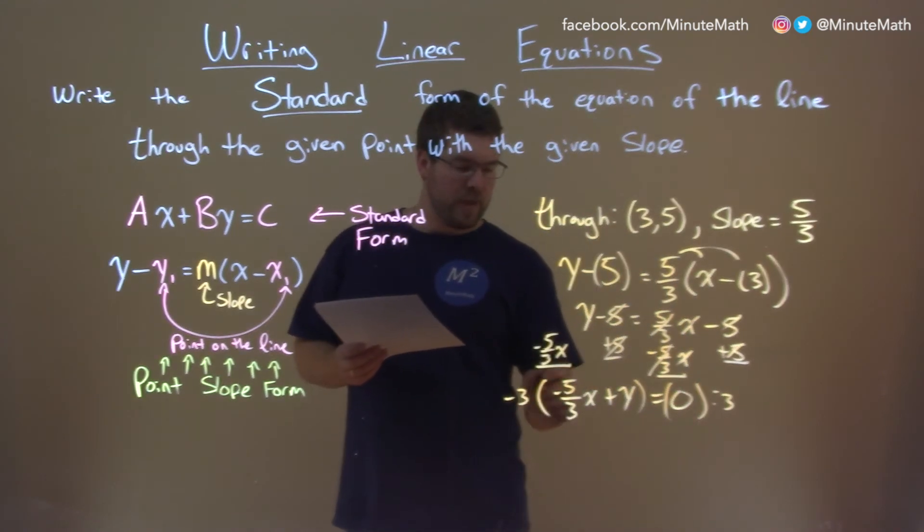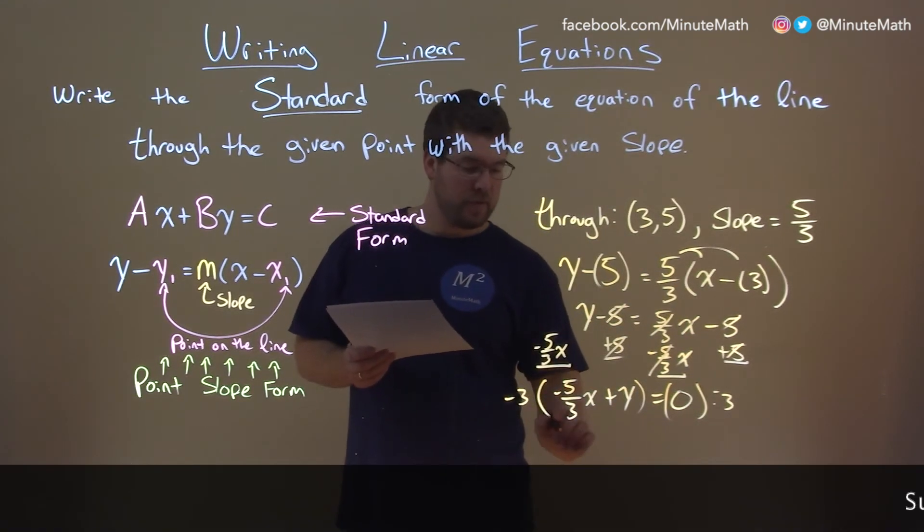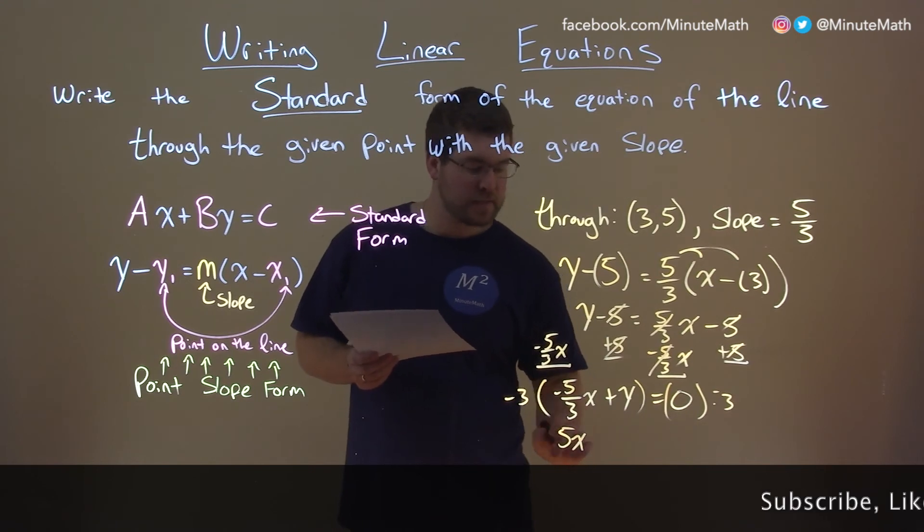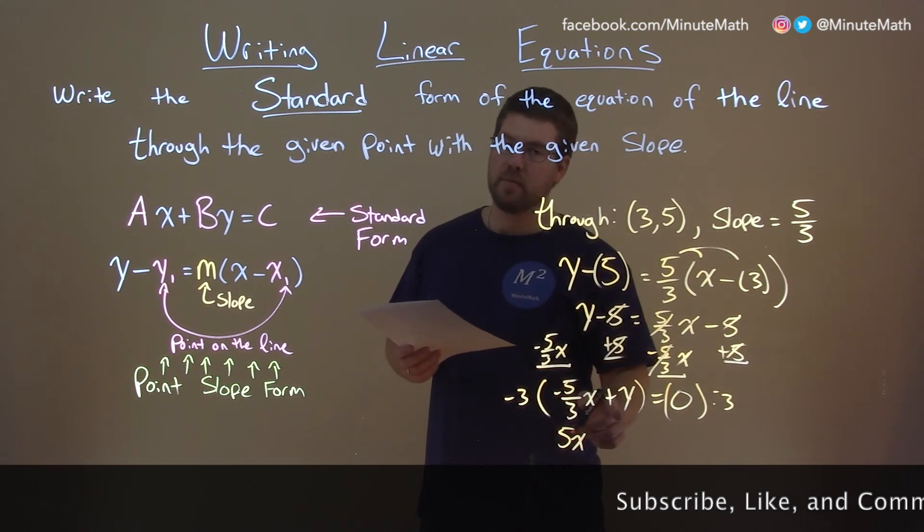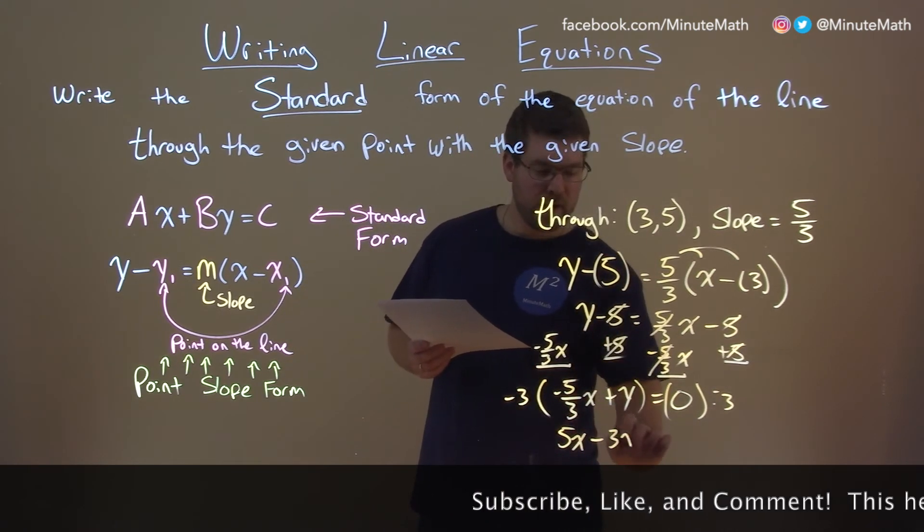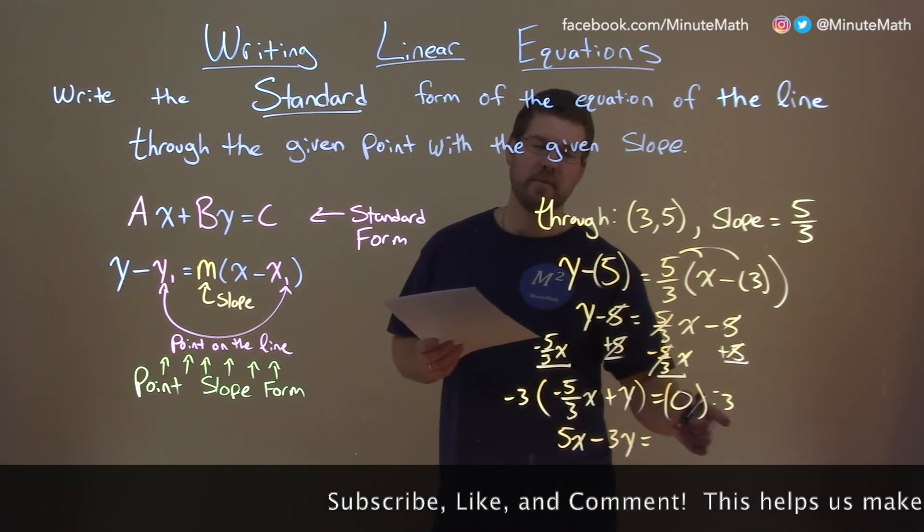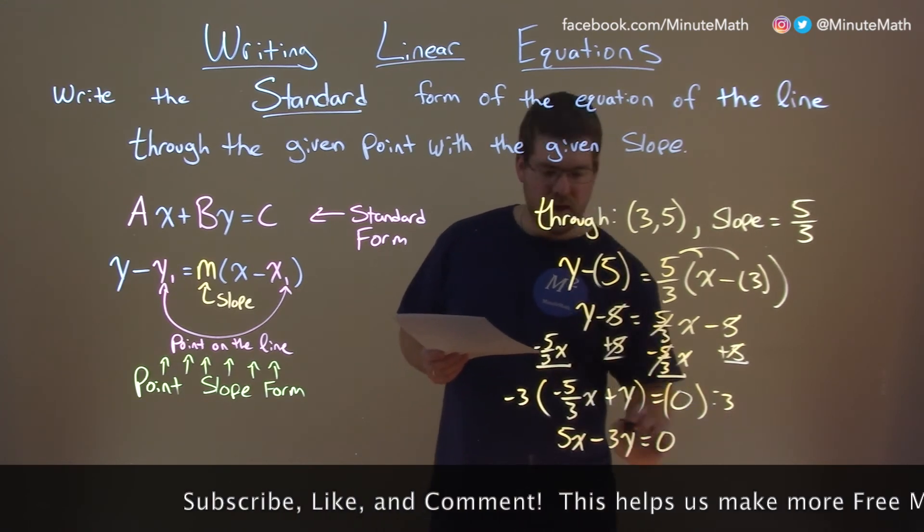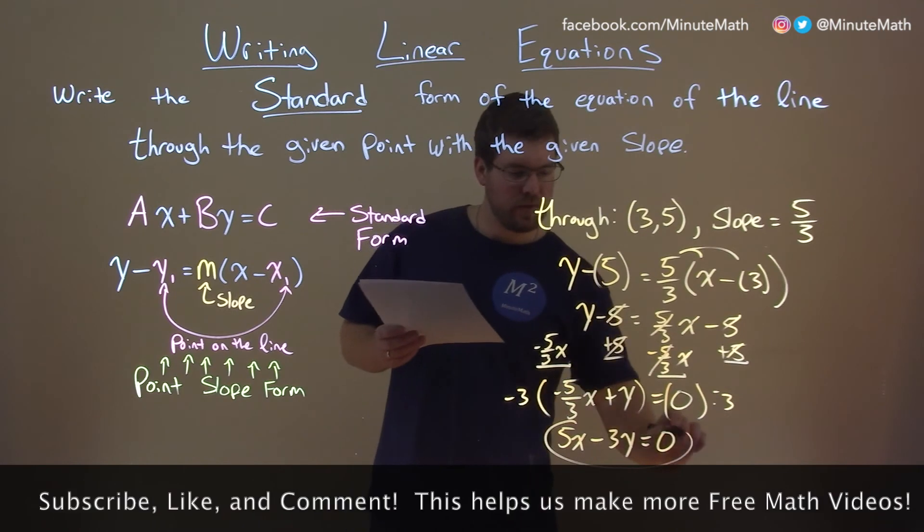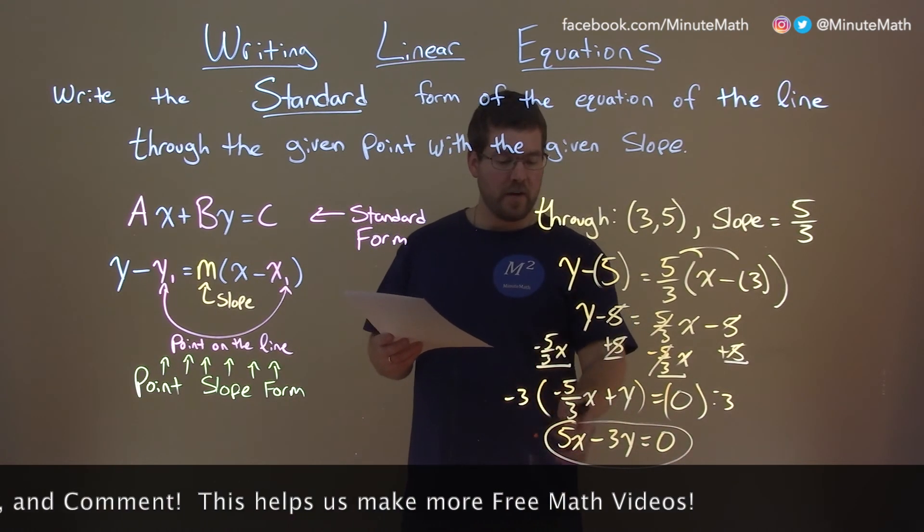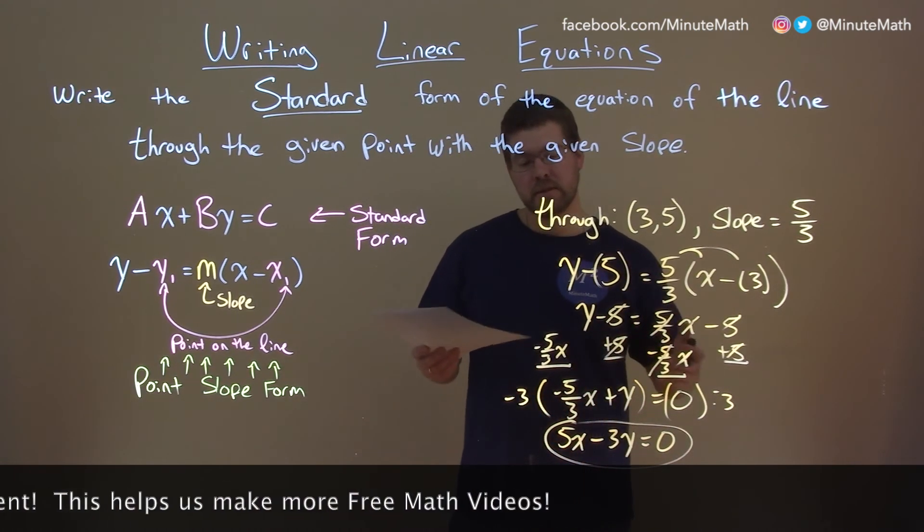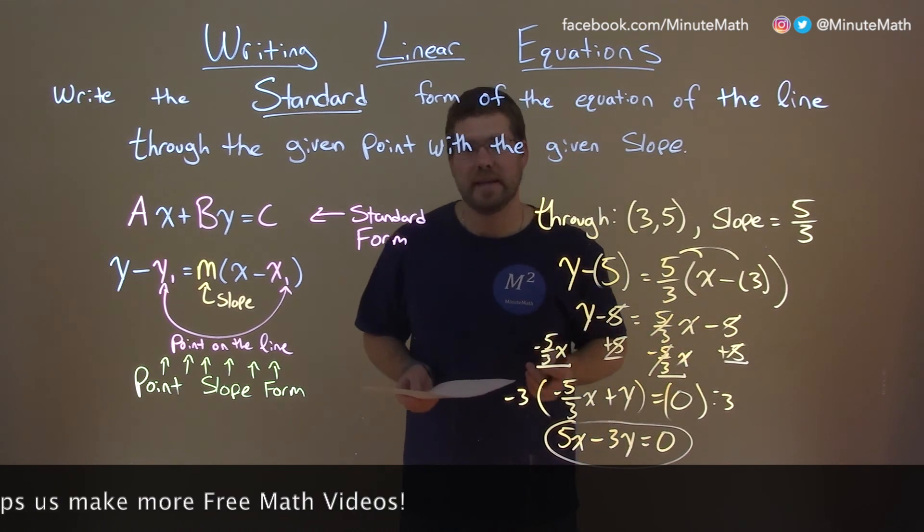What this does is make negative 3 times negative 5 thirds just a positive 5x. Negative 3 times y is minus 3y, equals 0 times negative 3 is still 0. And this makes it a little cleaner and looks a little nicer for our standard form of 5x minus 3y equals 0, and that is our answer.